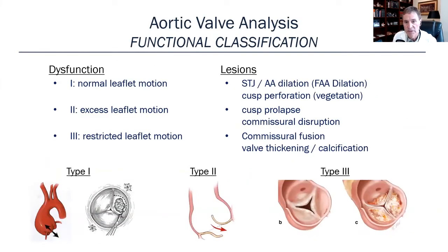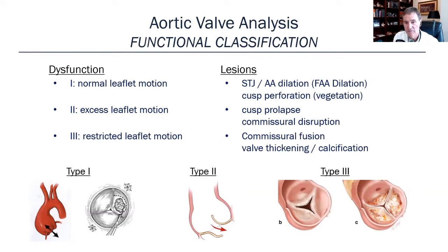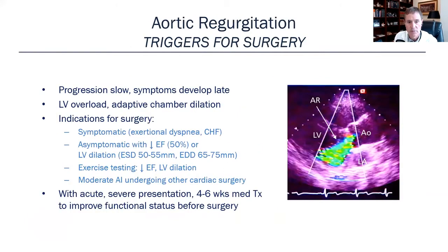The dysfunction can be classified into three discrete types of abnormalities. Number one, normal leaflet motion with sinotubular junction or aortic annulus dilatation pulling the valve apart. Number two, excess leaflet motion, which can be due to cusp prolapse, some sort of commissural disruption, or even a perforation. And number three, restricted leaflet motion, which is commissural fusion, valve thickening, or calcification.